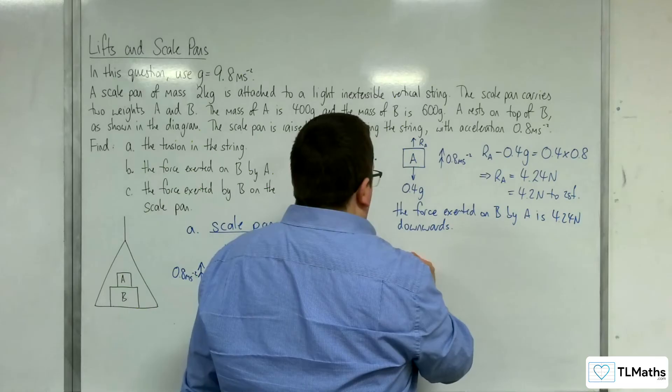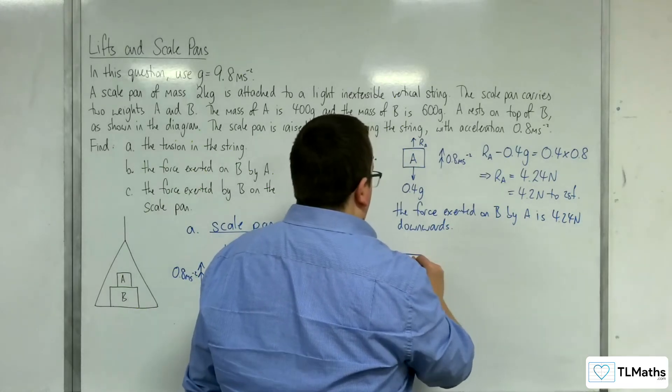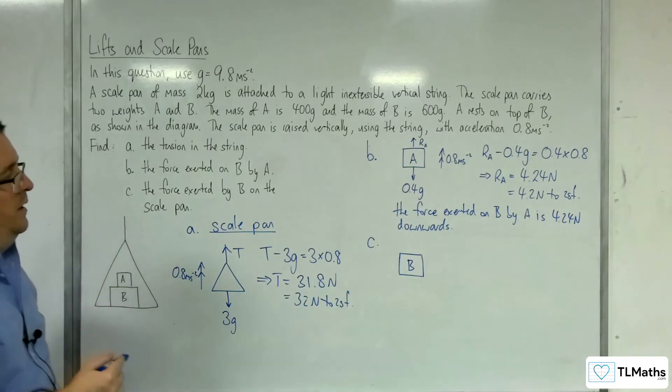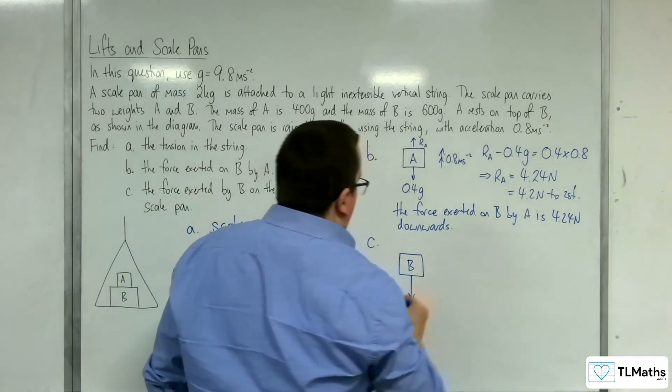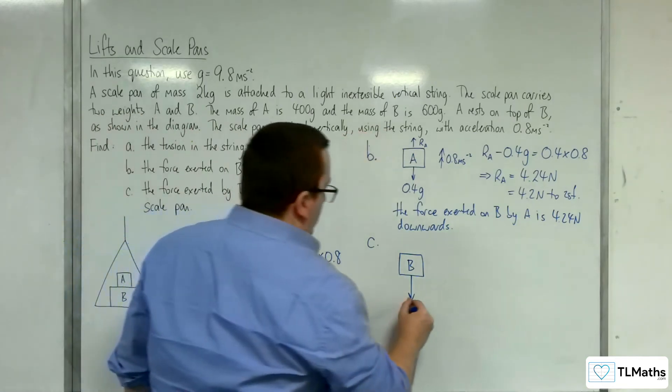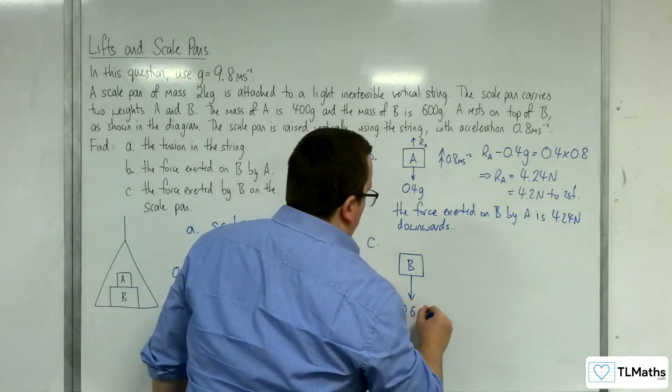So focus your attention now on B. So on block B, we've got its weight working vertically downwards, which is going to be its mass, 600 grams, so 0.6 kilos times by gravity.